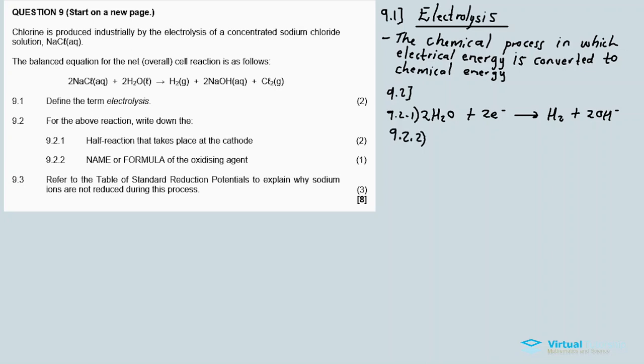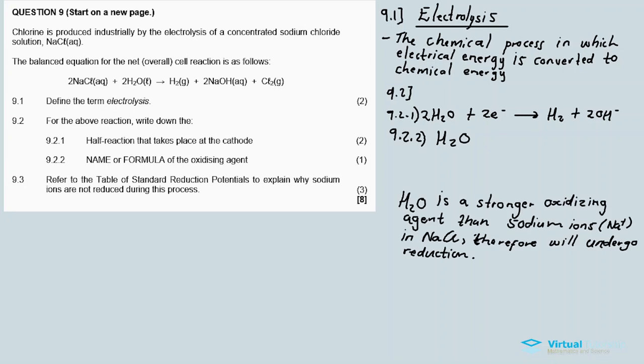Right, and then so 9.2.2 name or write down the name or formula of the oxidizing agent. Right between the sodium and water I just showed you that the water is more, has more ability to be reduced than sodium so that makes water the oxidizing agent. Right, the oxidizing agent. So 9.2.2 is H2O. Now for the final question refer to the table of standard reduction potential to explain why sodium ions are not reduced during this process. Well I've already gave away the answer it's because water is a stronger oxidizing agent than sodium ions therefore will undergo a reduction. Water will undergo a reduction. So question nine it was short. Thanks for watching in the description below is the link for the questions and recordings for this question paper. So yeah thanks for tuning in for another video. Bye-bye.